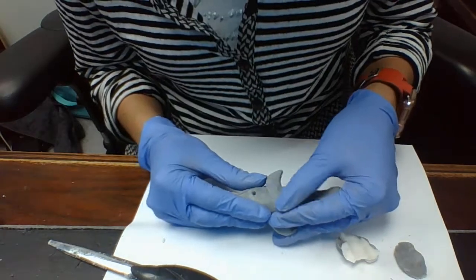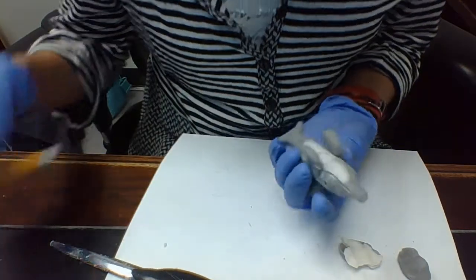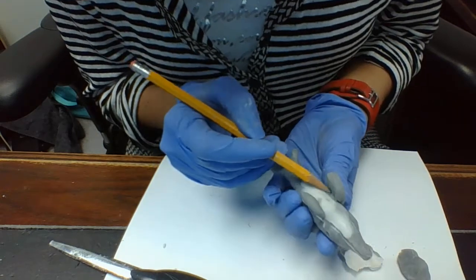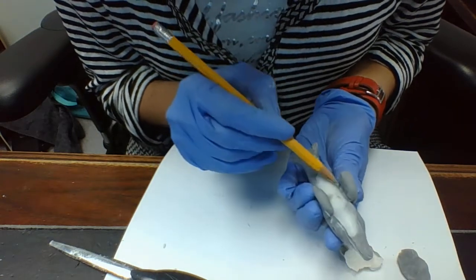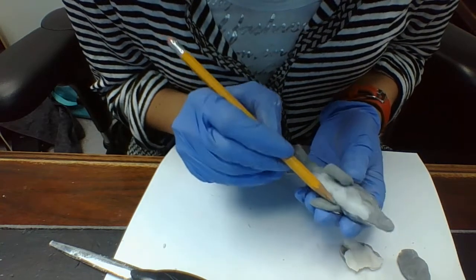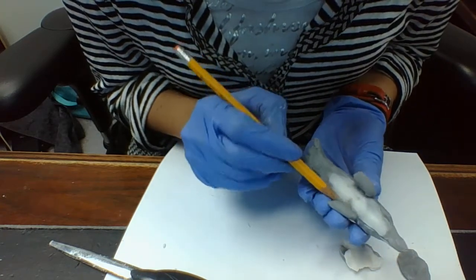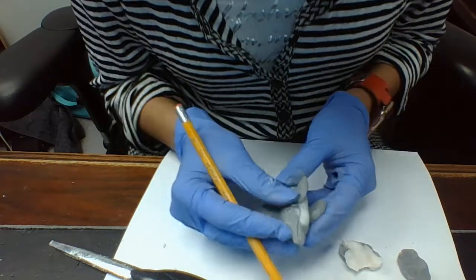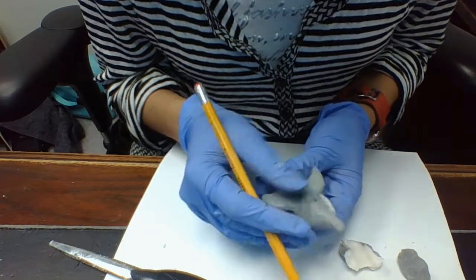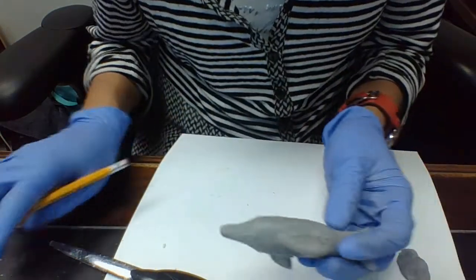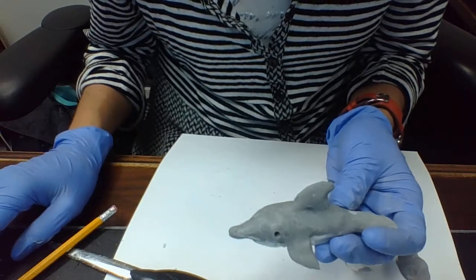Then I will continue to smoothen this on the top and at the bottom to make it stick. I'm going to use this pencil to make sure it sticks to the white part and it won't come off. Just like that you have the dolphin.